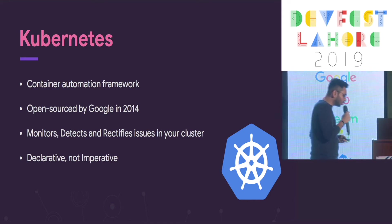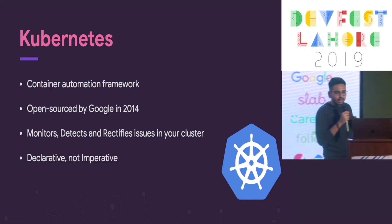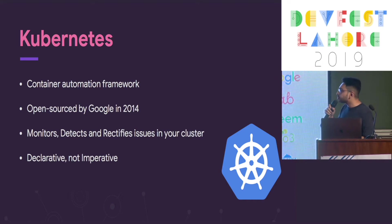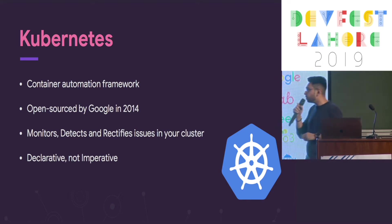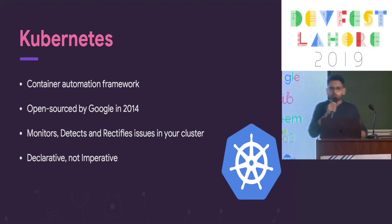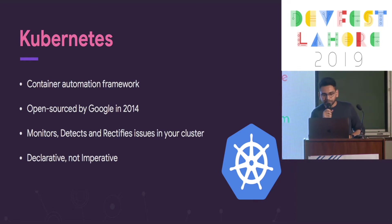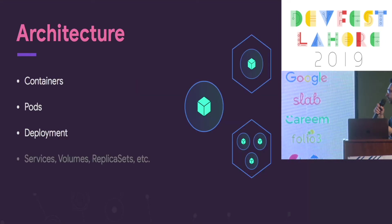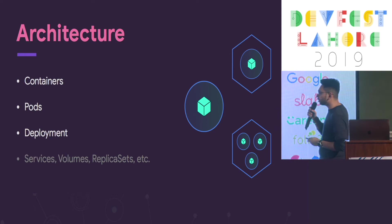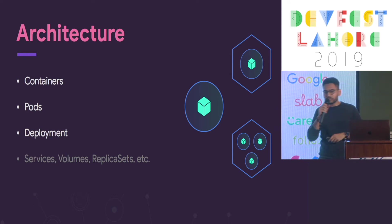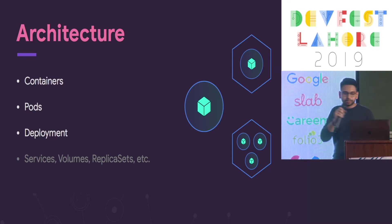What Kubernetes tries to do is orchestrate your infrastructure as much as possible with minimal configuration. It was open source and moved into production in 2014, and it monitors, detects, and rectifies issues in your cluster. It does all of this by using a declarative system.